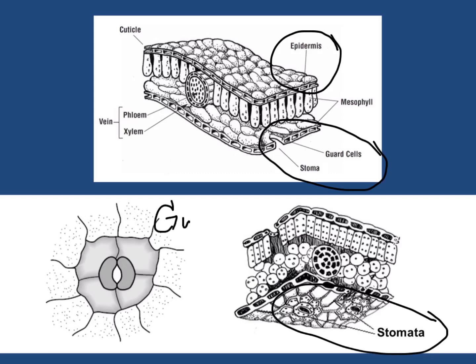Each stoma is surrounded by guard cells, and these guard cells help to control the size of the opening. If plants need lots of gas to be exchanged, the opening can be big. But if they are losing water and water vapor is escaping the plant, the guard cell can close each stoma to prevent the plant from losing too much water.